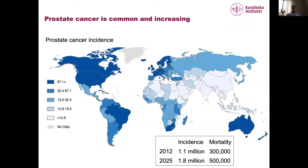Why work on prostate cancer to begin with? It's the most common cancer for men and also has the highest mortality rate among men in the western world. Looking at a world map, incidence and mortality are highest in the western part of the world, but are also increasing in Africa, Asia, and South America — mainly due to longer life expectancy and adoption of a westernized lifestyle.